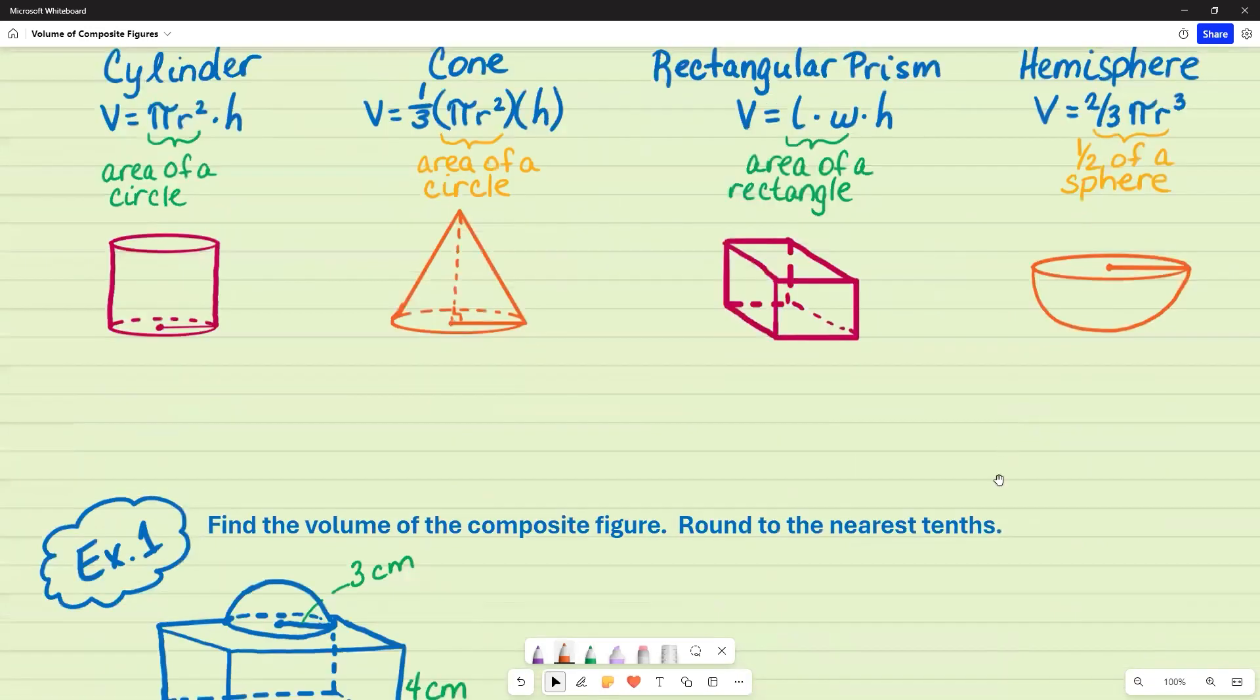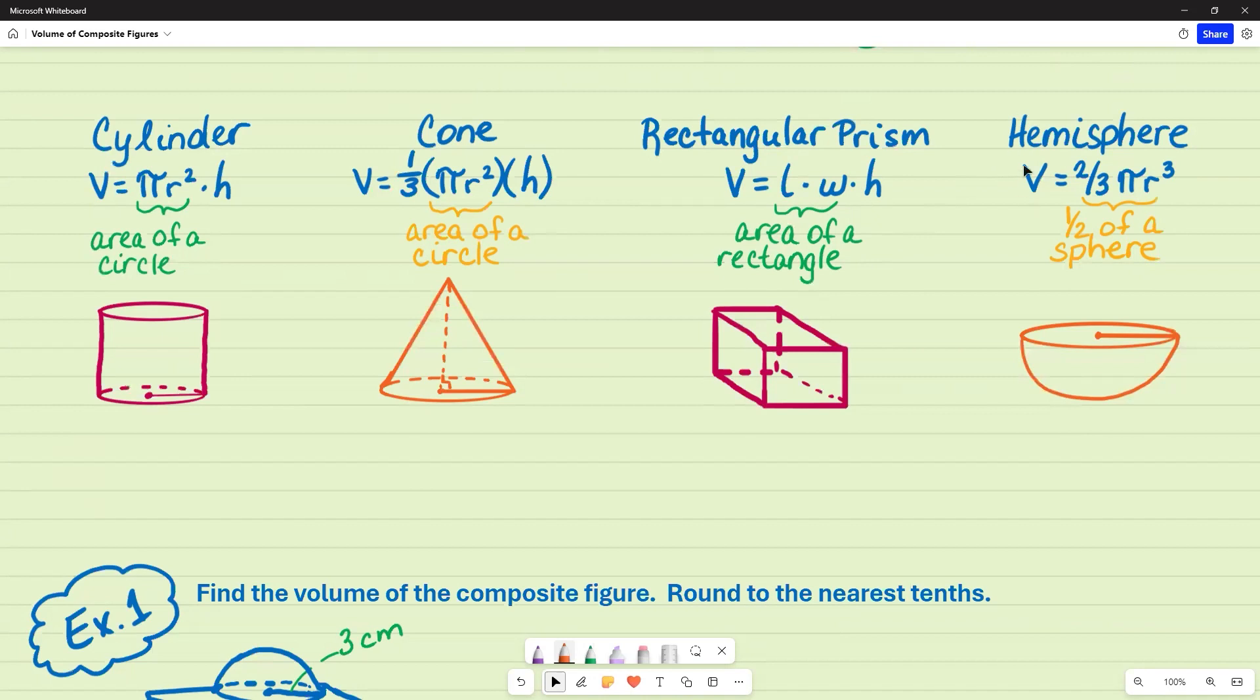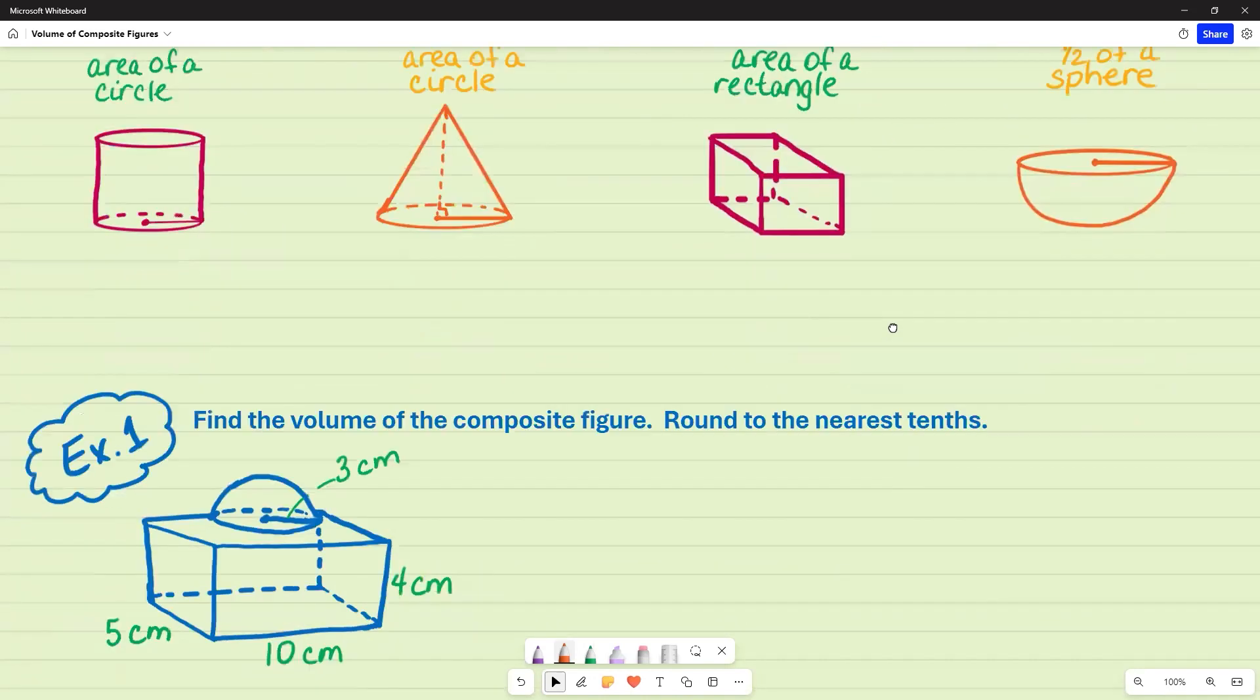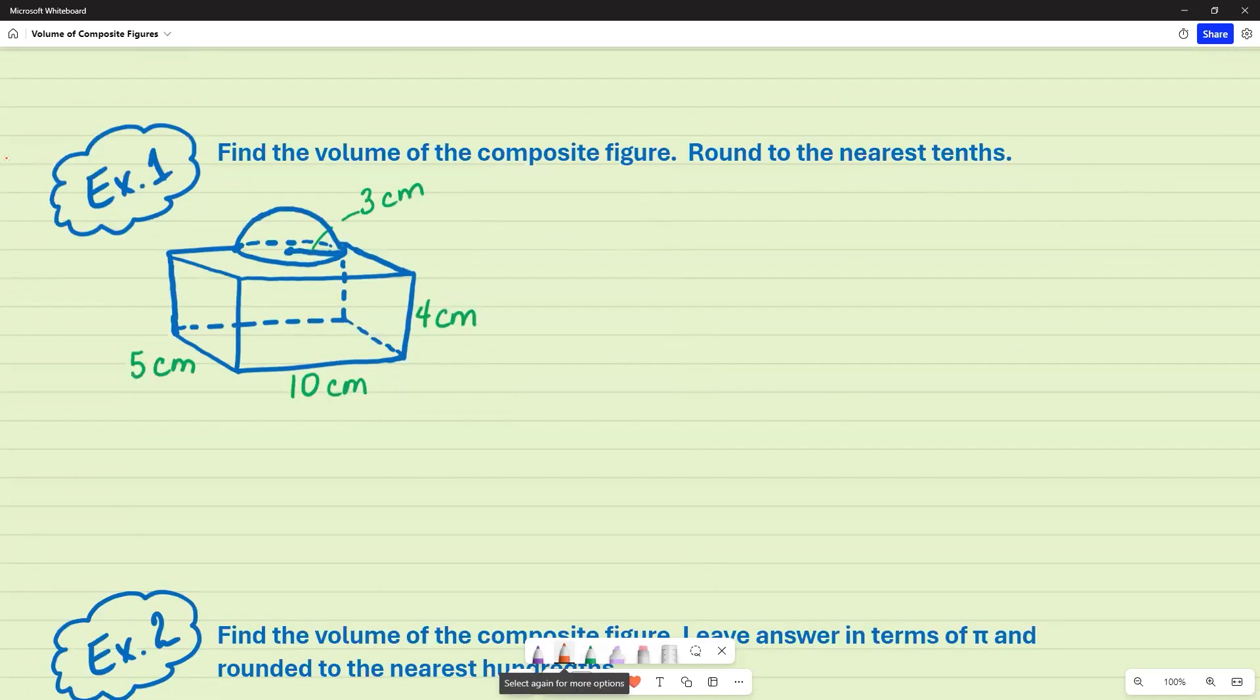So that means I'm going to use these two formulas. I'm going to find the volume separately and since they're on top of each other, I'm going to add those volumes together. The volume of a hemisphere is V equals two-thirds pi r cubed and we are given that r is three. So that's what we're going to substitute in for the formula.